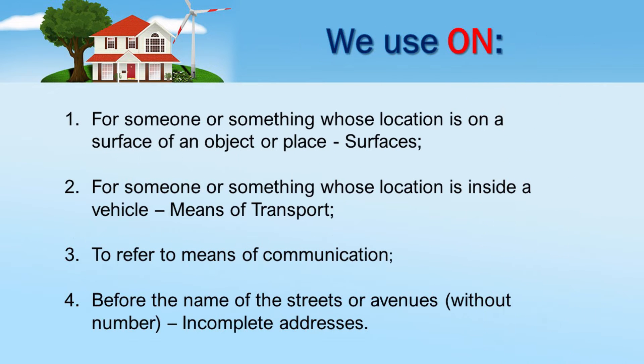We use 'on': 1. For someone or something whose location is on a surface of an object or place. 2. For someone or something whose location is inside a vehicle — means of transport. 3. To refer to means of communication. 4. Before the name of streets or avenues, without number — incomplete addresses.